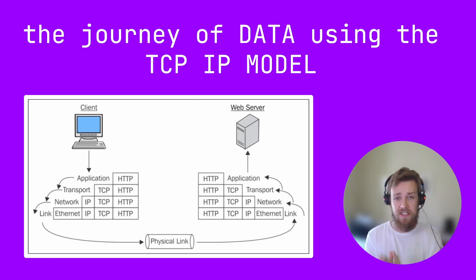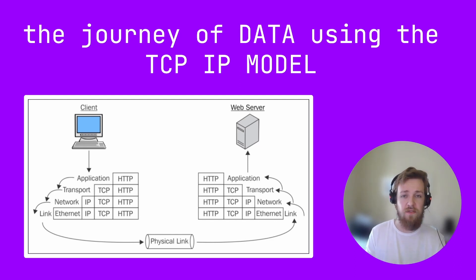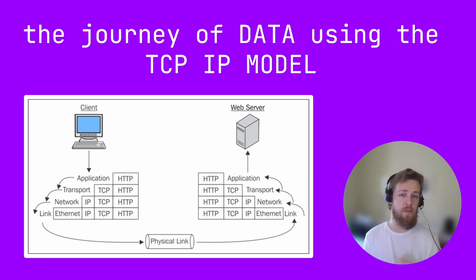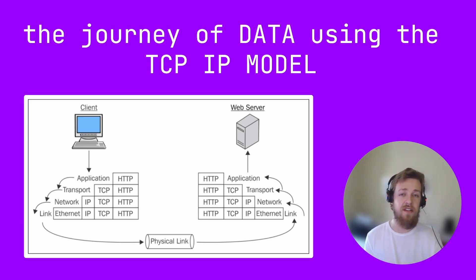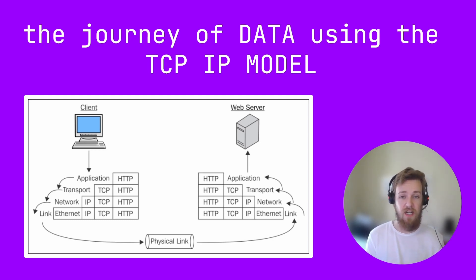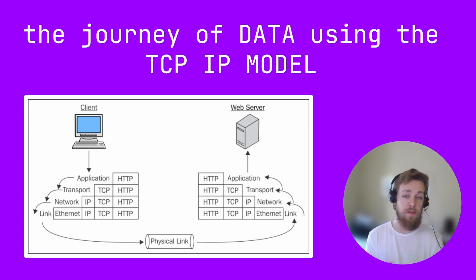Let's break down the journey of data using the TCP/IP model. The starting point is at the application layer — this is where you interact with an application that needs to send data over the network, such as sending an email, opening a web page, or streaming a YouTube video. This application layer prepares the data for the transport layer below, and this process is known as encapsulation. The transport layer divides the data into pieces called segments and assigns a source and destination port to these segments. The internet layer is where IP addresses come in — the segments are packaged into packets and assigned source and destination IP addresses, which allows the router to direct packets to other routers.